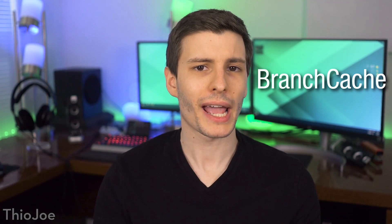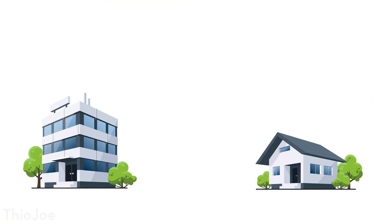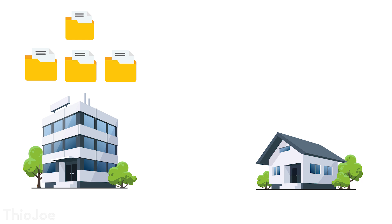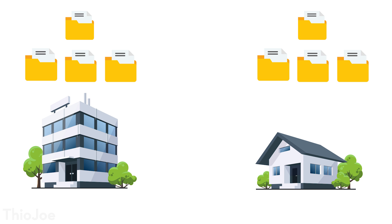The next feature is Branch Cache, mostly for organizations with multiple locations. Say you have a company headquarters and a remote branch office, and that office needs to access files stored at headquarters all the time. Instead of every person at the office having to download a file every single time they want to access it, Branch Cache creates a cache — the first time someone accesses a file, it keeps a copy at the office location. The next time that person or anyone else needs that file, it accesses it locally instead of going over the internet to headquarters. It's basically just a way to save bandwidth, and if the file updates, it'll update the cache.